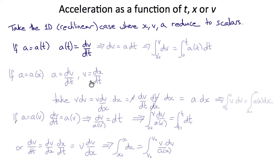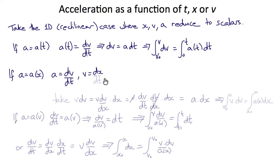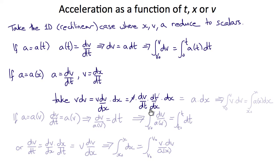In the case when a is a function of t, then a(t) = dv/dt, which means dv = a dt. Integrating for velocity: the integral from v₀ to v of dv equals the integral from 0 to t of a(t) dt. Now if a is a function of x, we make use of the fact that a = dv/dt and v = dx/dt. Computing v dv/dx — using the chain rule dv/dt = dv/dx · dx/dt — gives us a = v dv/dx.